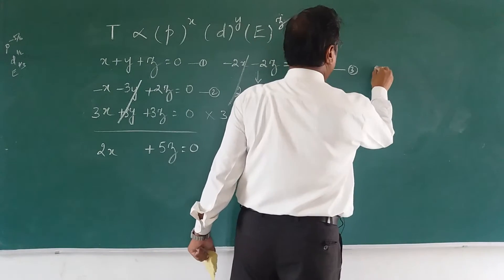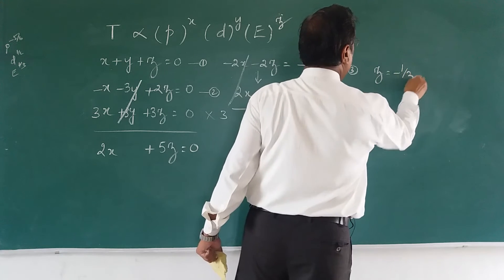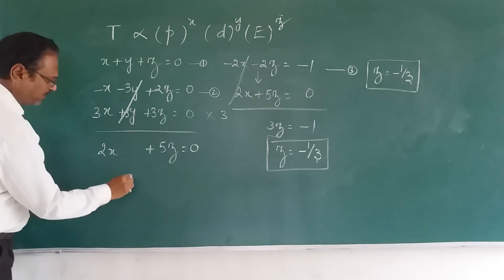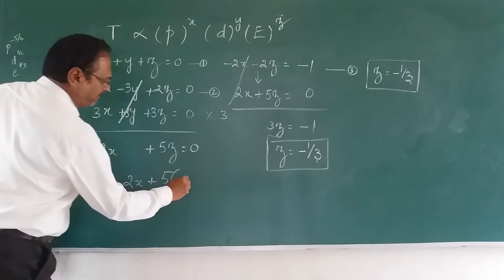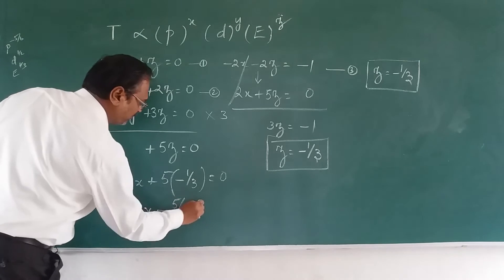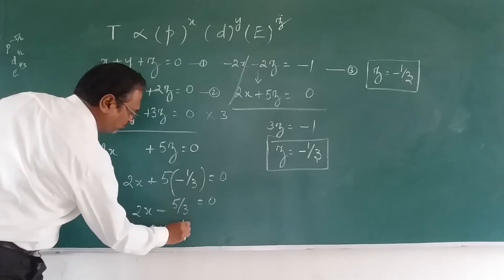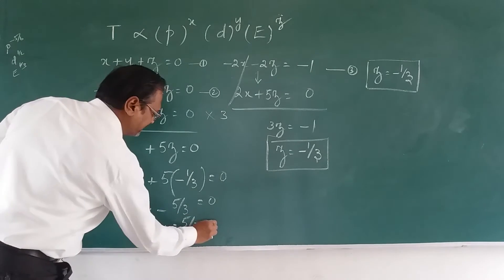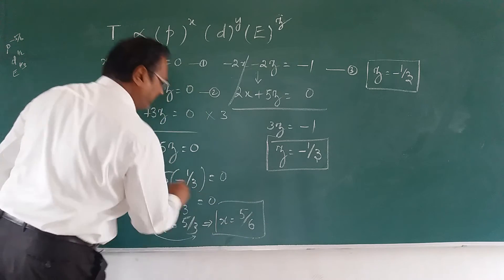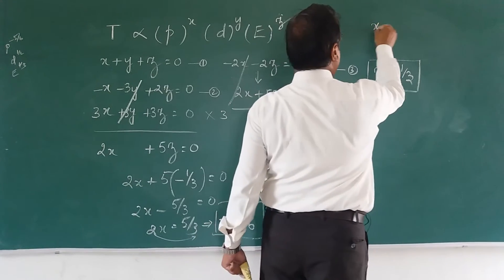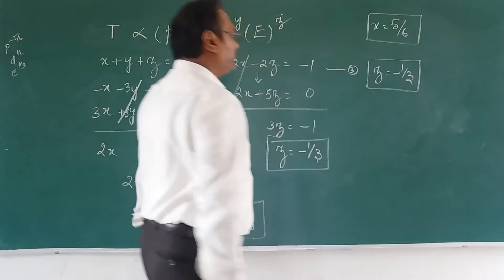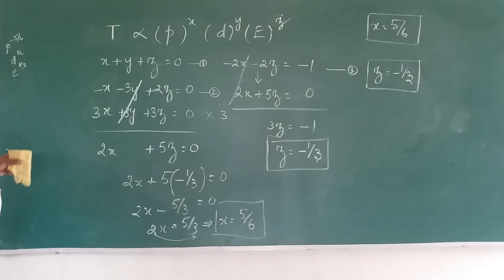With z = minus 1/3, substituting into 2x + 5z = 0: 2x = 5/3, so x = 5/6. Now substituting x and z into equation 1: 5/6 + y minus 1/3 = 0, so y + 5/6 minus 2/6 = 0, giving y + 3/6 = 0, thus y = minus 1/2.